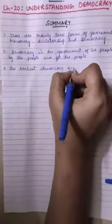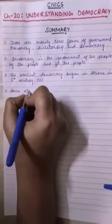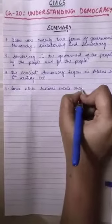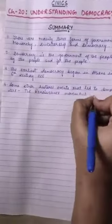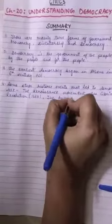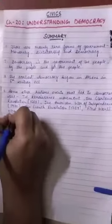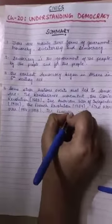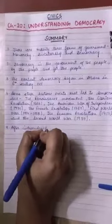The earliest democracy begins in Athens in the 6th century BCE. Some other historic events that led to democracy are the Renaissance Movement, the Glorious Revolution of 1688, the American War of Independence 1775, the French Revolution 1789, the First World War 1914–1918, the Russian Revolution 1917, and the Second World War 1939.